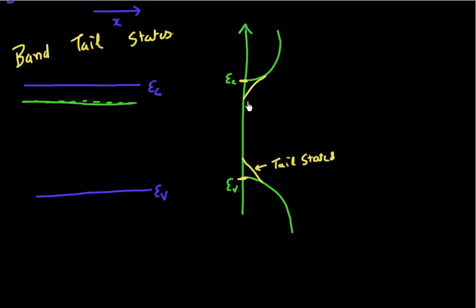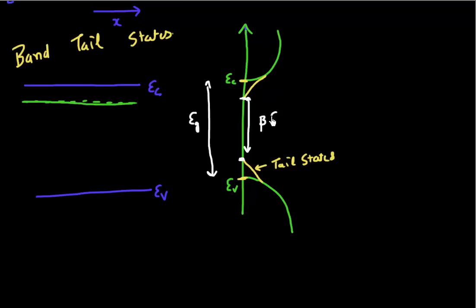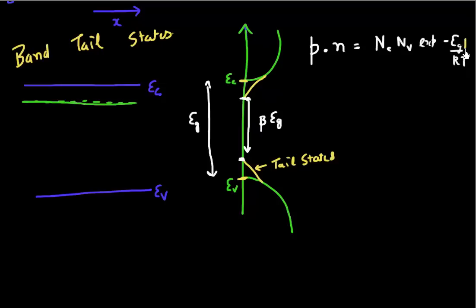These tail states essentially reduce the band gap. If my band gap previously was EG, now my effective band gap — where I have no density of states — is reduced to a smaller value. Mathematically, this band gap instead of being EG is now given by β·EG. Correspondingly, my law of mass action also changes: my concentration p·n, which was previously given by Nc·Nv·exp(-EG/kT), is now given by the exponential of my reduced band gap — my previous band gap multiplied by this band gap narrowing factor.